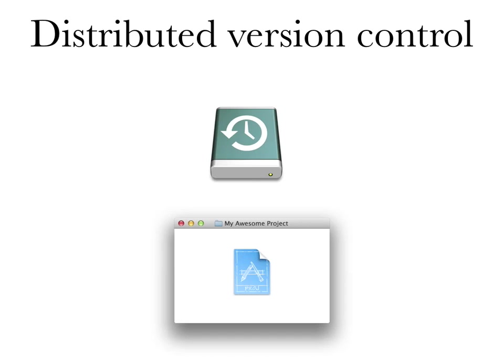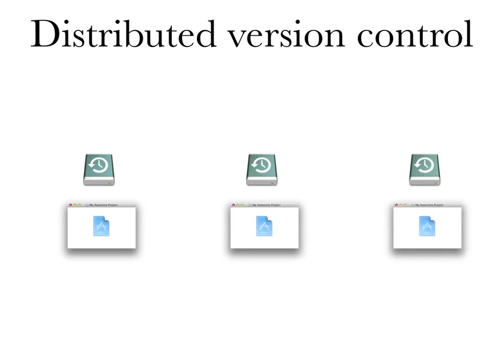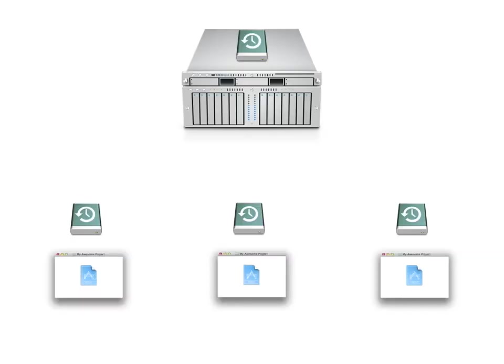Distributed version control is a lot better. In distributed version control — which is what Git is — each person has their own repository and pushes changes locally to their machine. You can then push and pull changes between other repositories, and there's no built-in concept of a master copy. Each team member has a repo of their own, and there's an origin repo on the server. As you work you commit changes to your repo and push to the server, but everyone at every moment has a full copy of the entire project history.